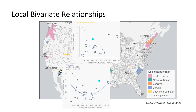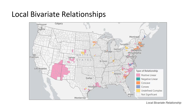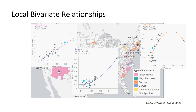Here's the relationship map for the COVID-19 death rate and the percentage of households without access to a vehicle. The primary relationship is positive and linear, as expected — households without access to a vehicle must rely on public transportation and ride sharing, potentially increasing their exposure to COVID-19. For the counties symbolized pink, higher percentages of households without access to a vehicle correspond to higher COVID-19 death rates. There are also some concave, convex, and undefined complex relationships. Even the convex and concave relationships express a positive relationship — as the percentage of households without access to a vehicle increases, so does the COVID-19 death rate.